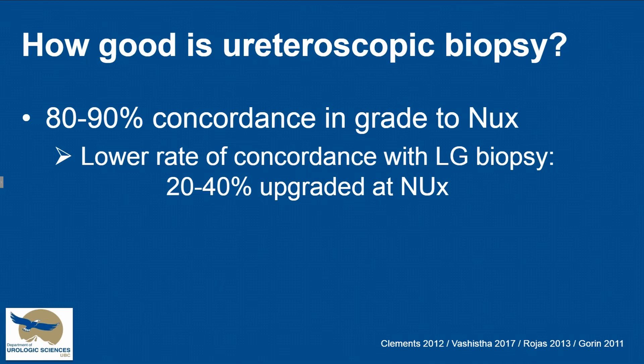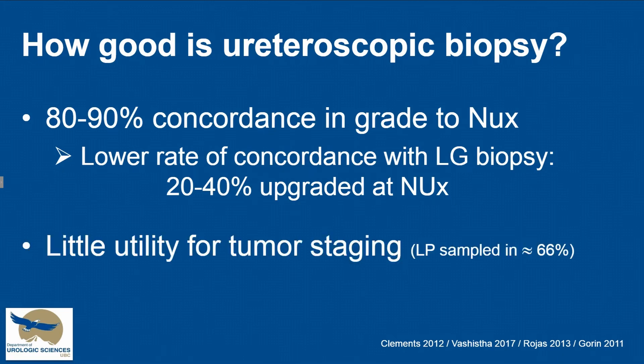If we think of ureteroscopic biopsy as the most we can do to enhance diagnosis and define treatment well, how good is it itself? It only has 80–90% concordance between the grade on biopsy and the grade on nephroureterectomy, and this drops significantly if the biopsy shows low-grade disease, as approximately a third will be upgraded at the time of nephroureterectomy. Biopsy is also very poor for staging because it's very difficult to get a deep enough biopsy — only about two-thirds will have lamina propria in the specimen.